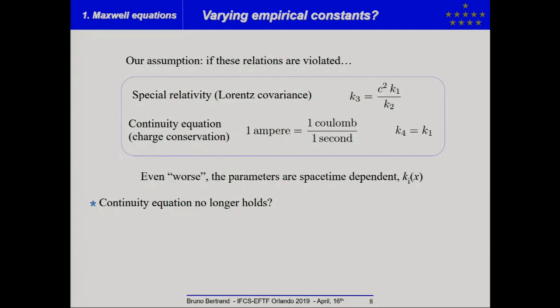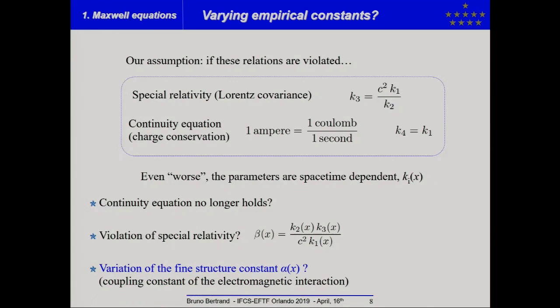There are some consequences. First, is the continuity equation holds again? Is there, in that case, a violation of special relativity governed by, for example, a beta parameter? And is there a variation to the fine structure constant and to be brief, such a variation would imply that the strength of electromagnetism could vary in different points of space.